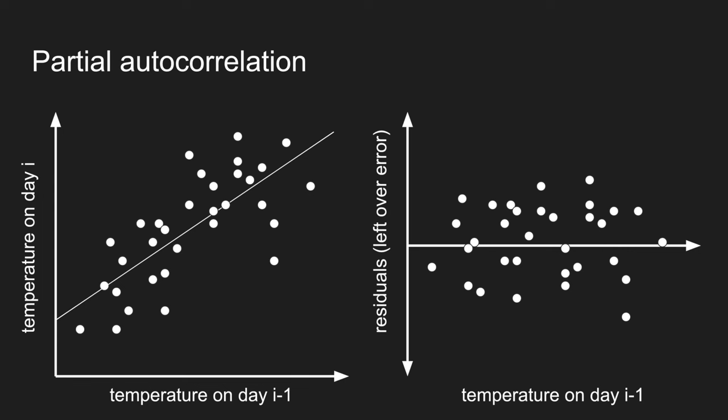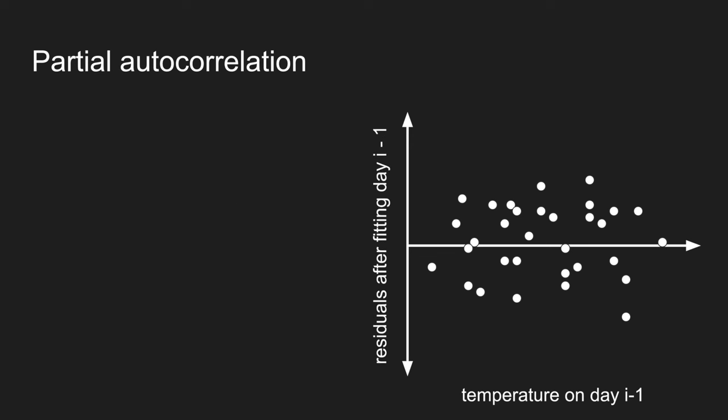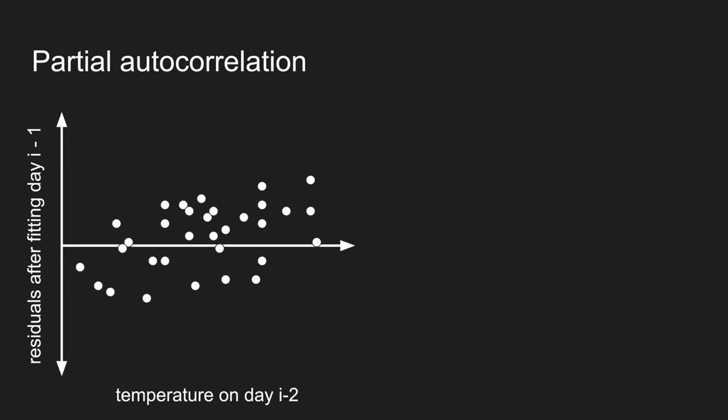Now, instead of, with autocorrelation now, we would find the correlation between the original temperatures and the temperature on day I minus two. What we are going to do is take the residuals after fitting day I minus one, the leftover errors, and we're going to plot those against the temperature on day I minus two, the day before.